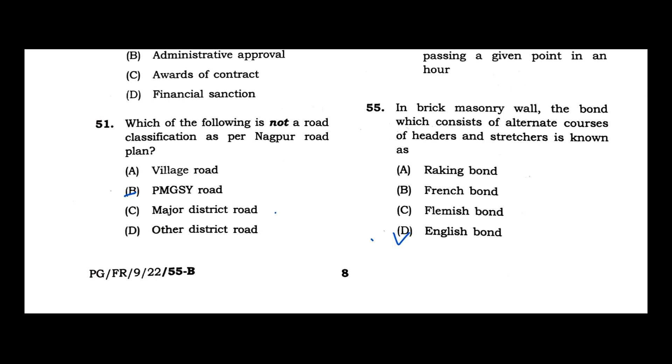Question 51: Which of the following is not a road classification as per Nagpur Road Plan? Village road, Major District Road, Other District Road. The classifications are National Highway, State Highway, but PMGSY route is not included. Pradhan Mantri Gram Sadak Yojana is not available in Nagpur plan. Option B is the correct answer.